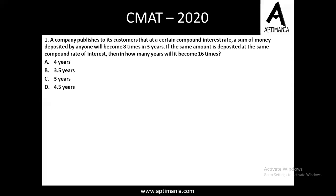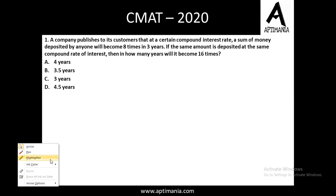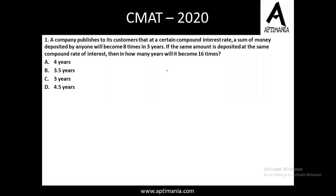Here's question number 1. The question is from Simple and Compound Interest. A company publishes to its customers that at a certain compound interest rate, a sum of money deposited by anyone will become 8 times in 3 years. Since the principal is not given to us, I am assuming it to be 100. The amount is becoming 8 times, that is 800, in a duration of 3 years and the rate is not given to us.